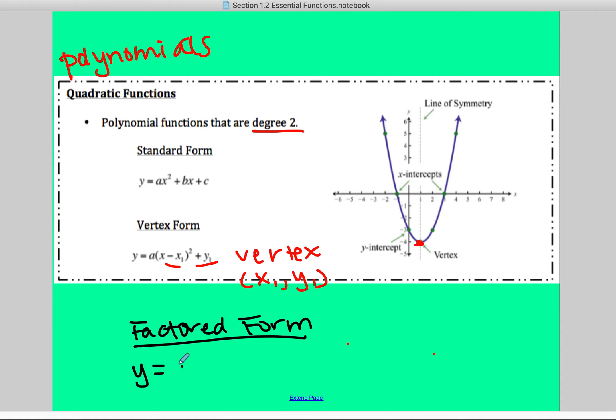You have y equals a, and then x minus, I'm going to use p, and x minus q. In factored form, p and q are your zeros, and just remember zeros are also your x-intercepts.